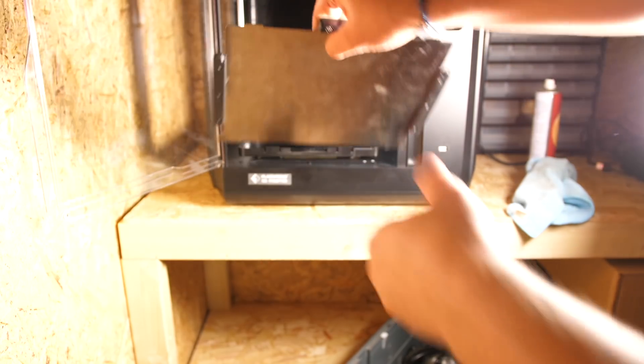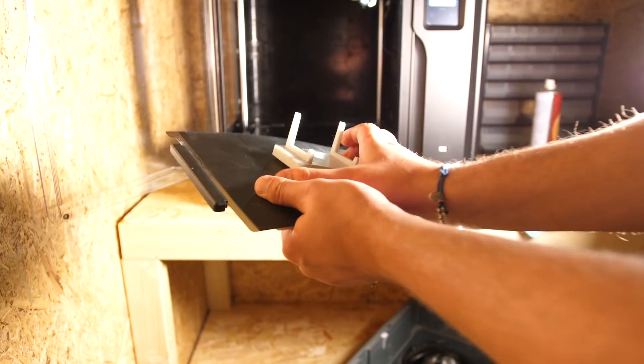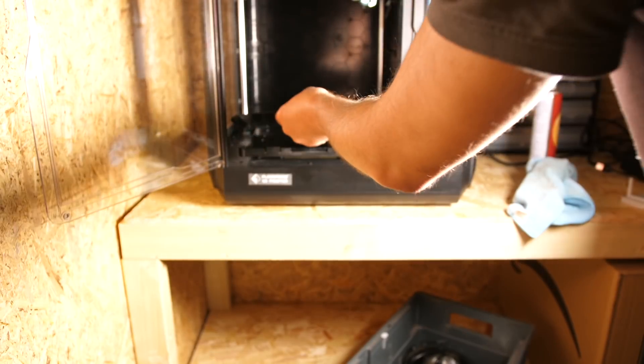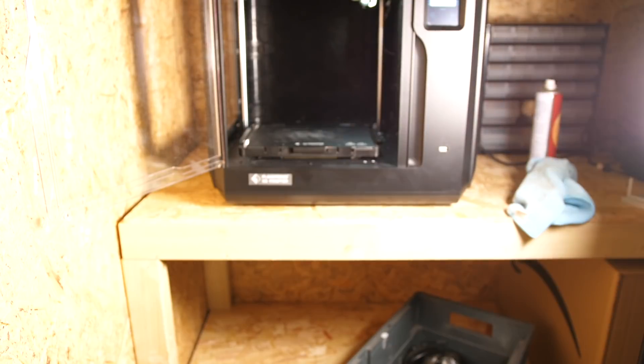They've also added a magnetic build plate which makes it so easy to remove your model. It has slight flex in it as well so that you can pop the prints straight off and that makes things so much easier, so I really like the addition of that magnetic build plate. You don't have any kind of fasteners, you just simply slide it in, and that's not the only thing that's quick release as well.